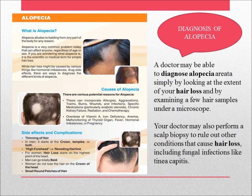In this image you can see the causes, side effects, and complications of alopecia. Causes include: allergies, aggravation, toxins, burns, wounds, and infections. Side effects and complications include thinning of hair. In men, it starts at the crown, temples, and both, with a high forehead — for example, a receding hairline. For women, hair loss starts on the highest point of the head. Men can go totally bald.